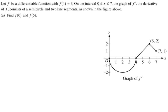Let f be the differentiable function with f of 4 equals 3. On the interval from 0 to 7, the graph of f prime, the derivative of f, consists of a semicircle and two line segments, as shown in the figure. We want to find f of 0 and find f of 5.